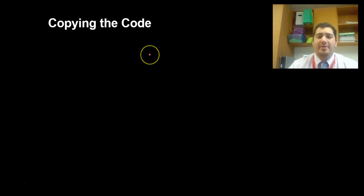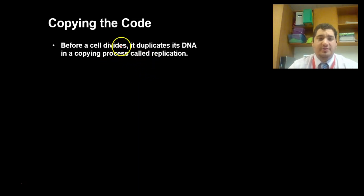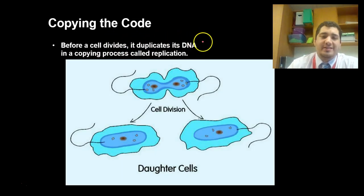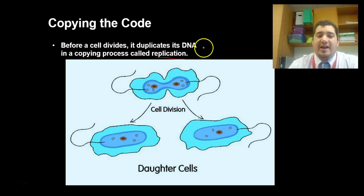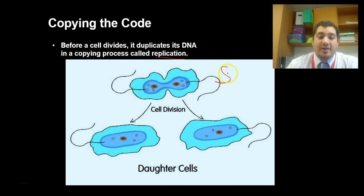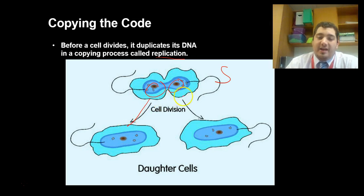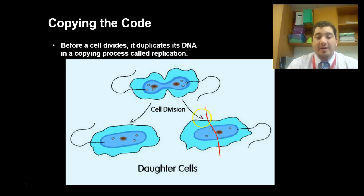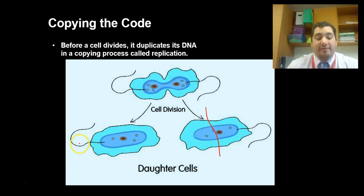To start off, we're going to talk about copying the code, or what DNA replication actually is. It's important to remember that before a cell divides, it needs to duplicate its DNA in a copying process called replication. This takes place during the S phase of interphase. It's crucial because a cell doing asexual reproduction needs to pass down an equal amount of DNA to both daughter cells. If they both get half, they're both going to die. Both daughter cells need an exact copy of the DNA in order to do all the life processes necessary to survive.